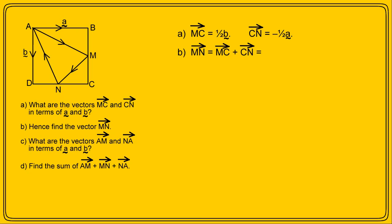Now please remember, if you do have trouble with any parts of these proofs, just stop the video and go through the text until you fully understand it. Now for part B: we need vector MN, and this looks suspiciously like a low road. But the corresponding high road is going from M to C and then from C to N, and we've just worked out what these vectors are. So vector MN must be vector MC plus vector CN, which is half of b plus minus a half of a, equal to half b minus a half a, or a half of (b minus a).